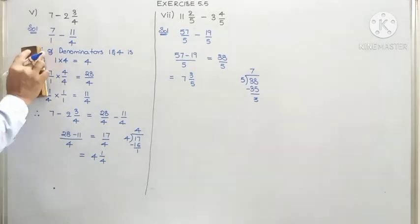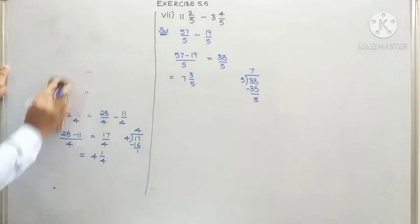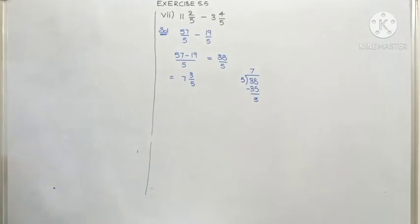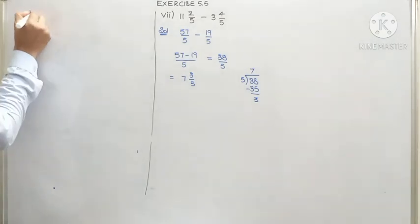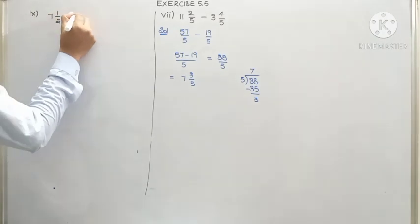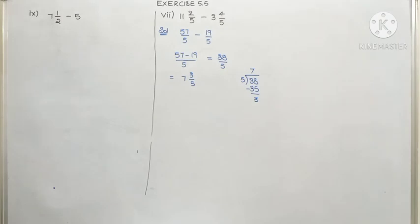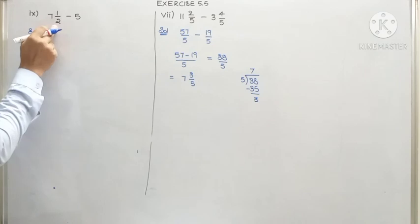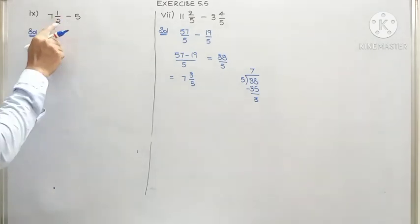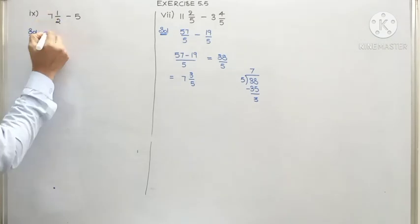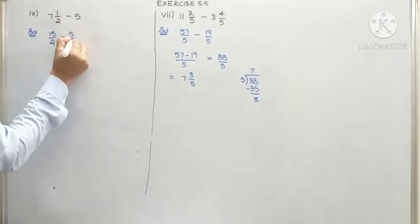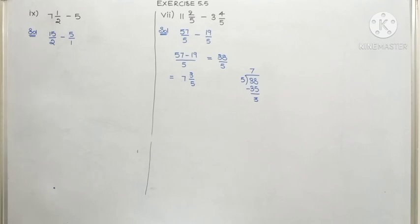Now I am moving to the 9th question. Check the board carefully. The 9th question is 7 and 1 by 2 minus 5 — a mixed fraction minus a whole number. So let us convert: 2 times 7 is 14, 14 plus 1 is 15, so 15 by 2. Minus the whole number 5, written as a fraction: 15 by 2 minus 5 by 1.